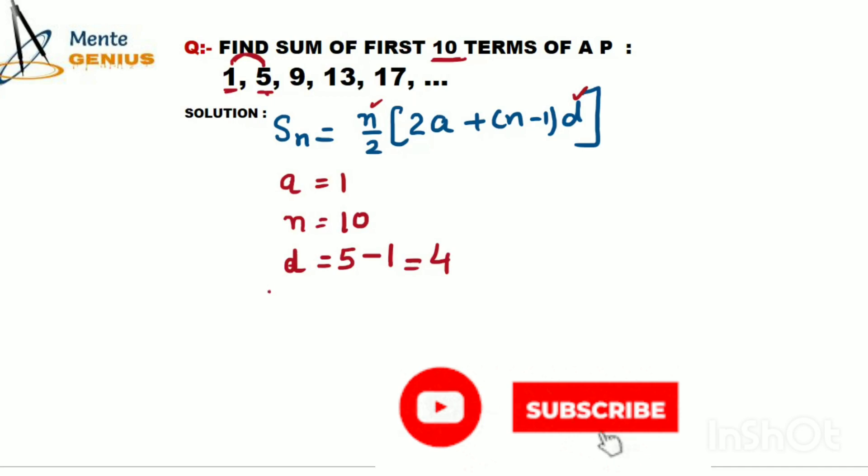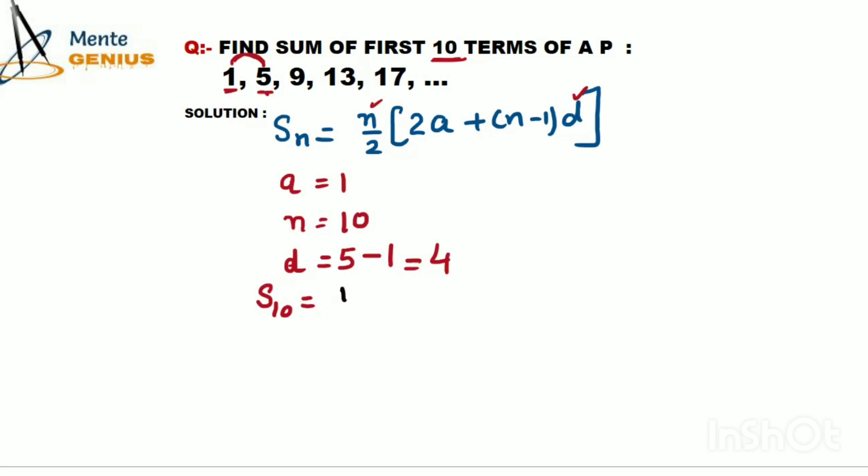Now let's find the sum of 10 terms. It will be very easy. n/2 = 10/2, n's value is 10. Double of a: a is 1, so 2a = 2(1). Then 10 minus 1 into d, and d is 4.